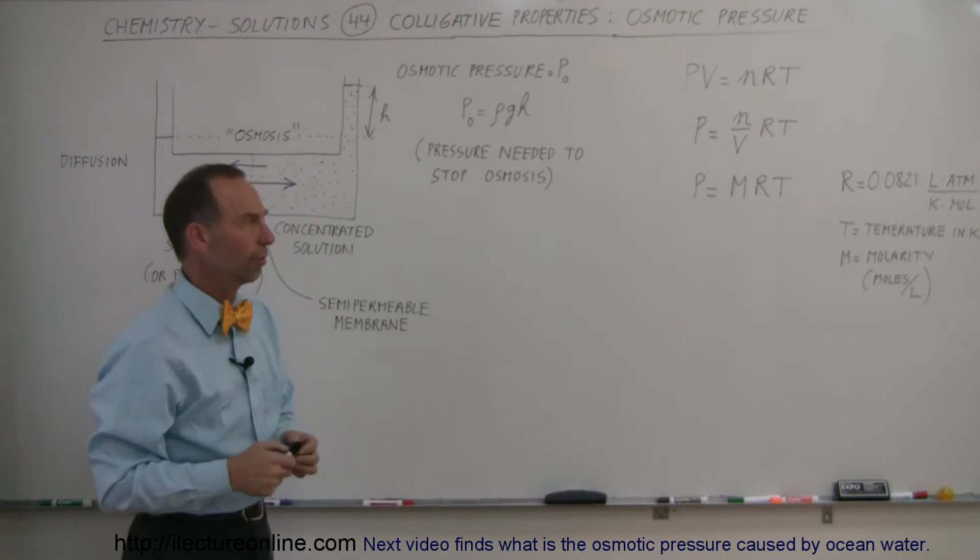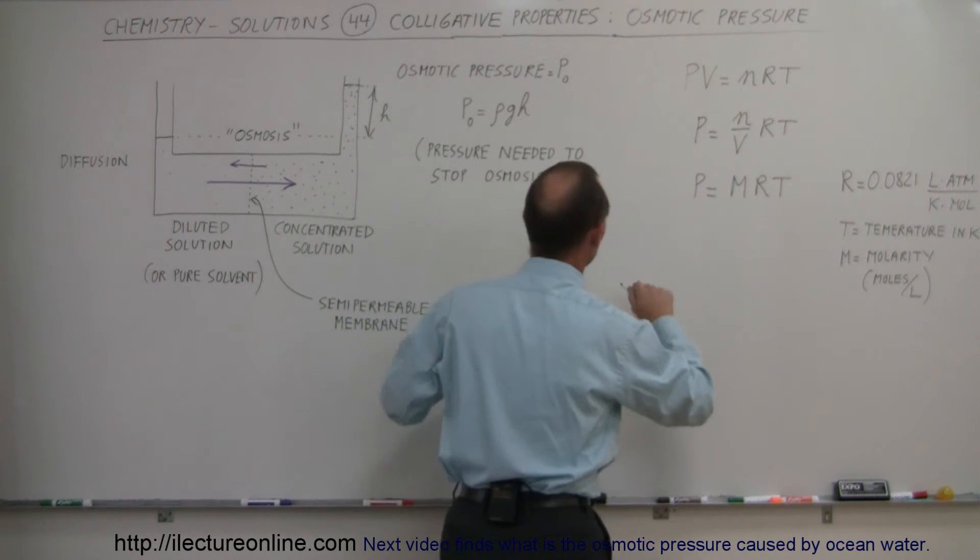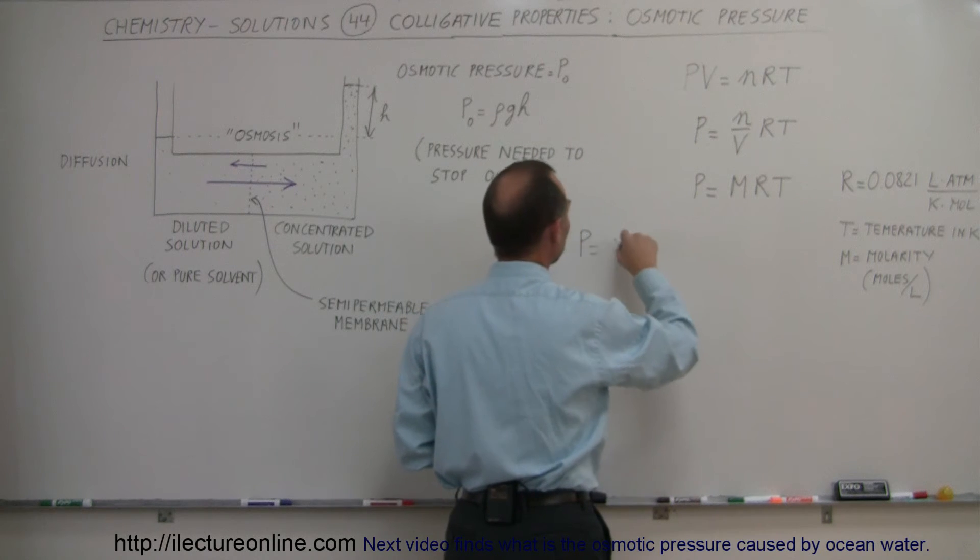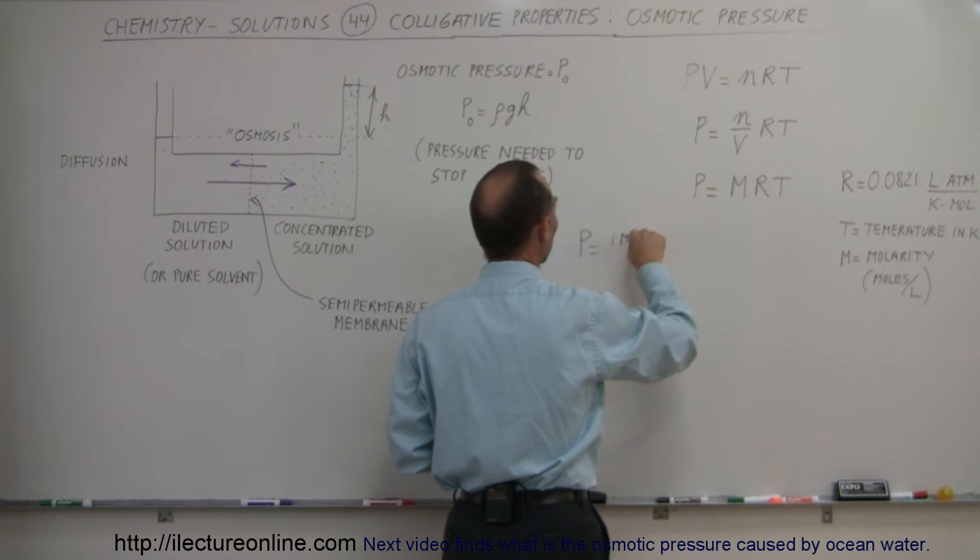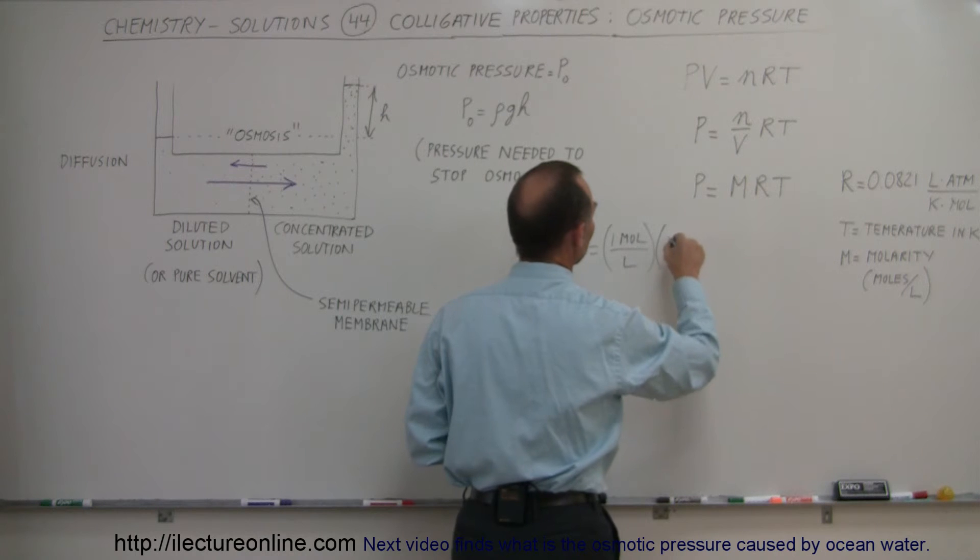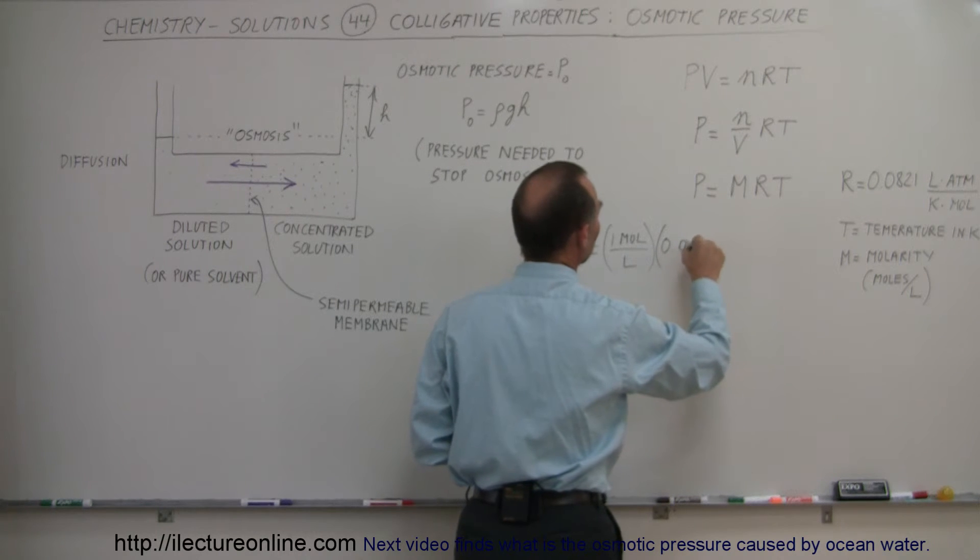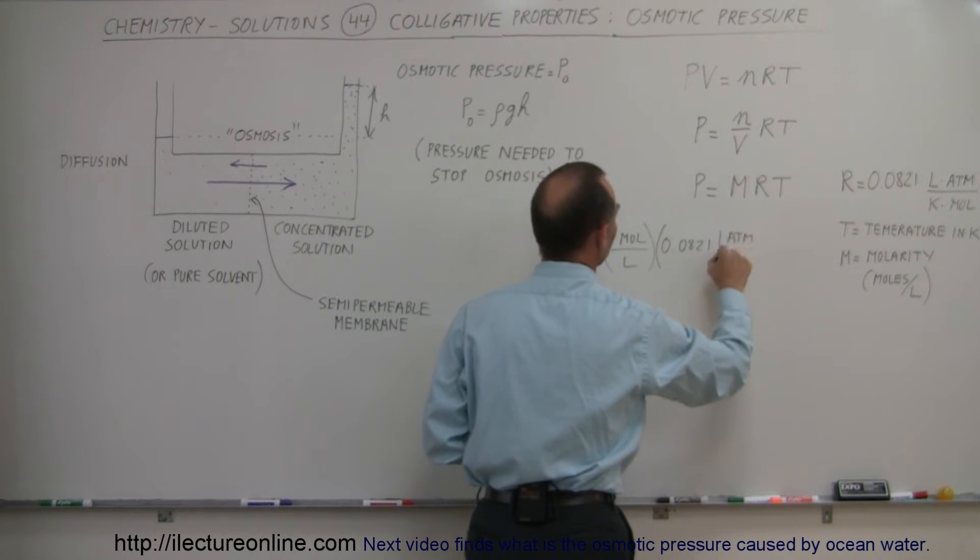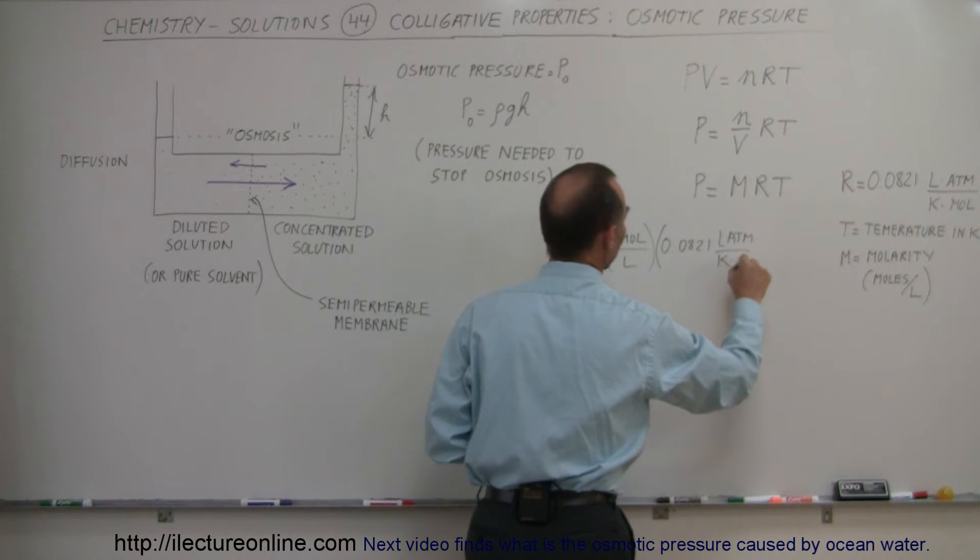What would be the osmotic pressure? The pressure would be equal to the molarity, one mole per liter—that's a one molar solution. The constant for R, the gas constant, is 0.0821 liter atmospheres divided by Kelvin times moles.